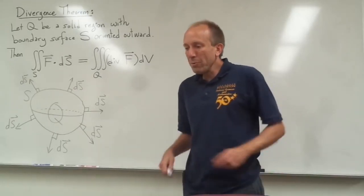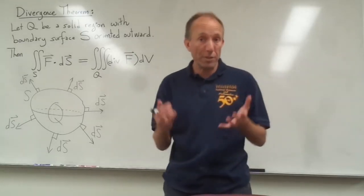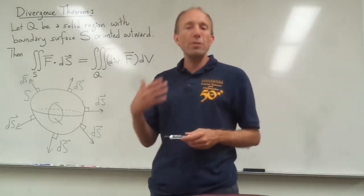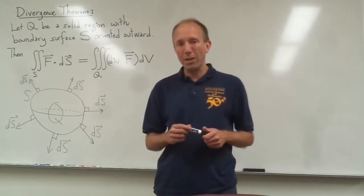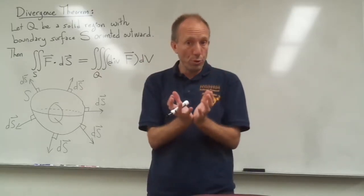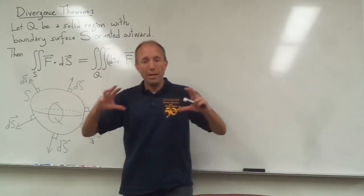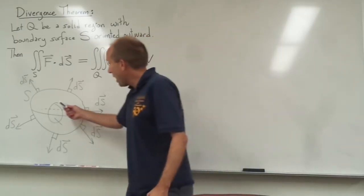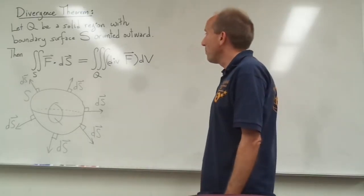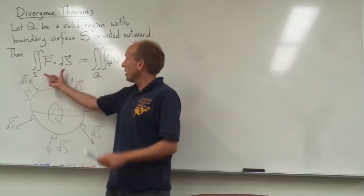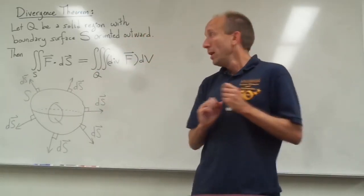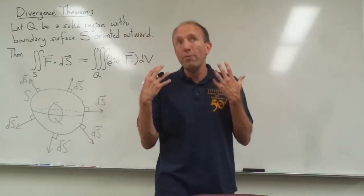We were talking last time in class about calculating flux integrals — that's really the topic of Section 15.6. It turns out that in certain situations, there are some nice shortcuts for calculating flux integrals. One of them is if you have a surface S that is closed. If it's closed, then there is a solid body inside that surface, which we usually call Q, a three-dimensional solid object. We can calculate the flux integral by converting it into a triple integral. The nice thing about the triple integral is that there are no vectors in it.